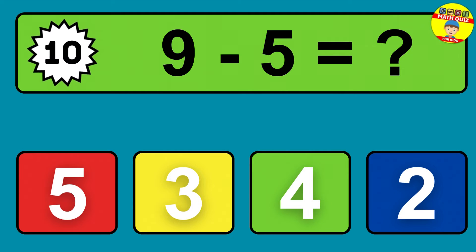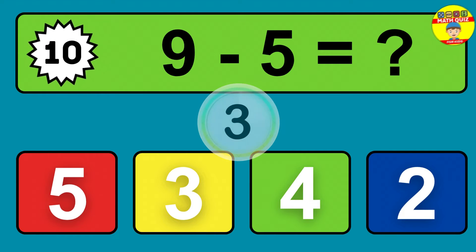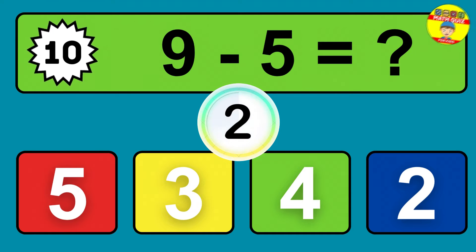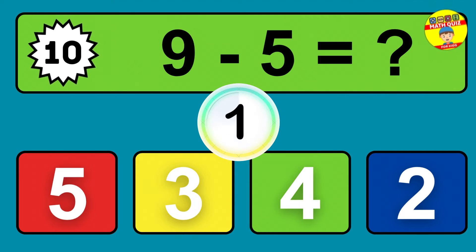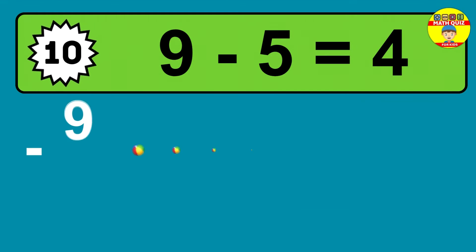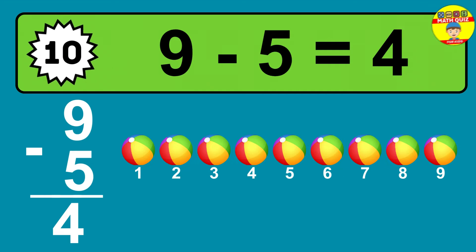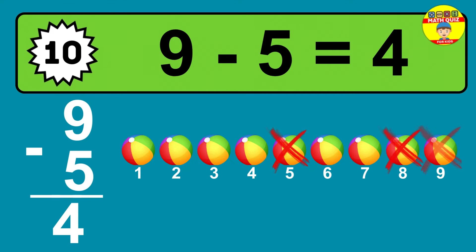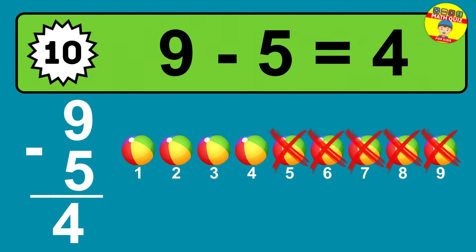Question ten: nine minus five equals what? The answer is nine minus five is four. Let's count it: one, two, three, four.